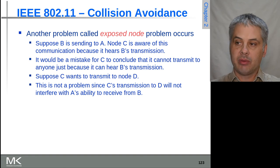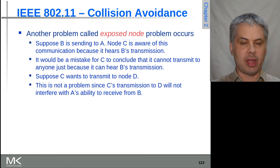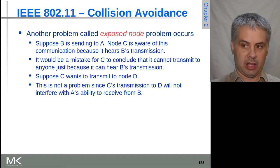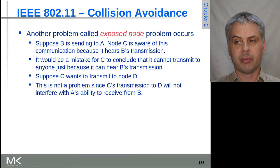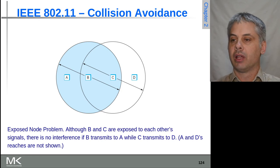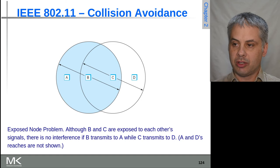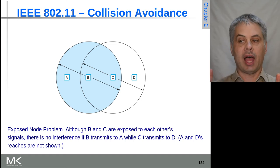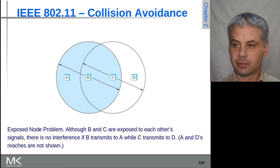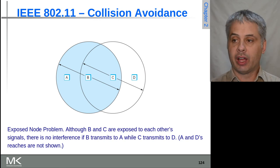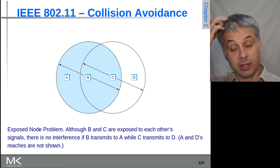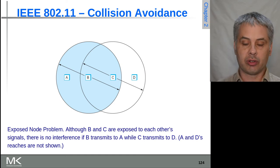Another problem is the exposed node problem. If B wants to send to A, C can hear B's transmission — but that doesn't mean C can't transmit to someone else at the same time. If there's a node D off to the side, C can transmit to D while B transmits to A, because neither A nor D can hear the other's transmission in a way that causes interference. These problems are difficult to solve optimally, and in a fully distributed network without central coordination, an optimal solution is essentially impossible.